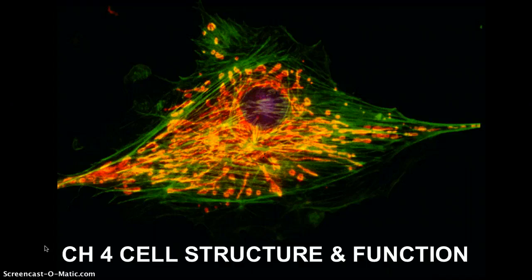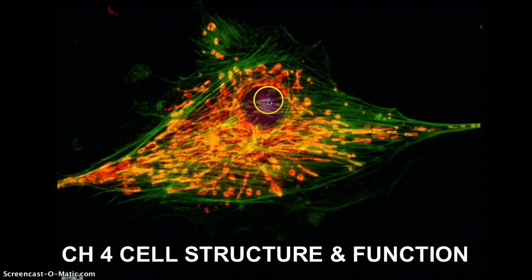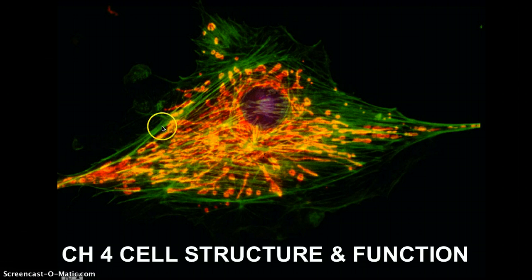Chapter 4: Cell Structure and Function. If you look here, you see a fluorescent cell — darkly stained in the center would be the nucleus of that cell, which is the control center of the cell, and you can see the network of the cell all around it.